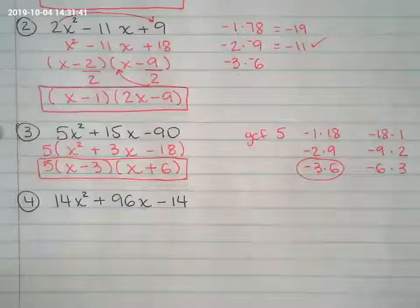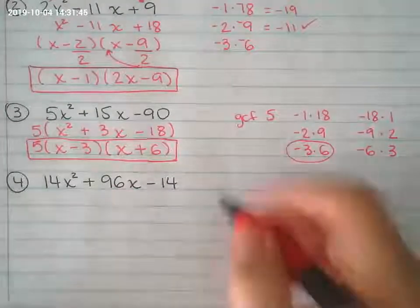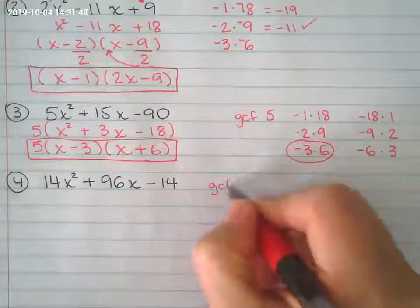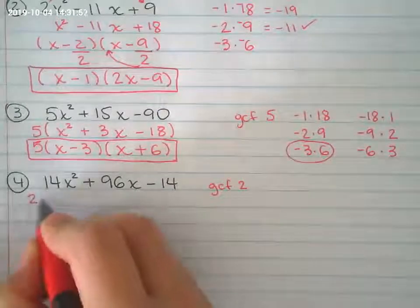Last one. Always look for GCF. And I am able to divide everybody by 2. So my GCF right there is 2. Pull the GCF out.